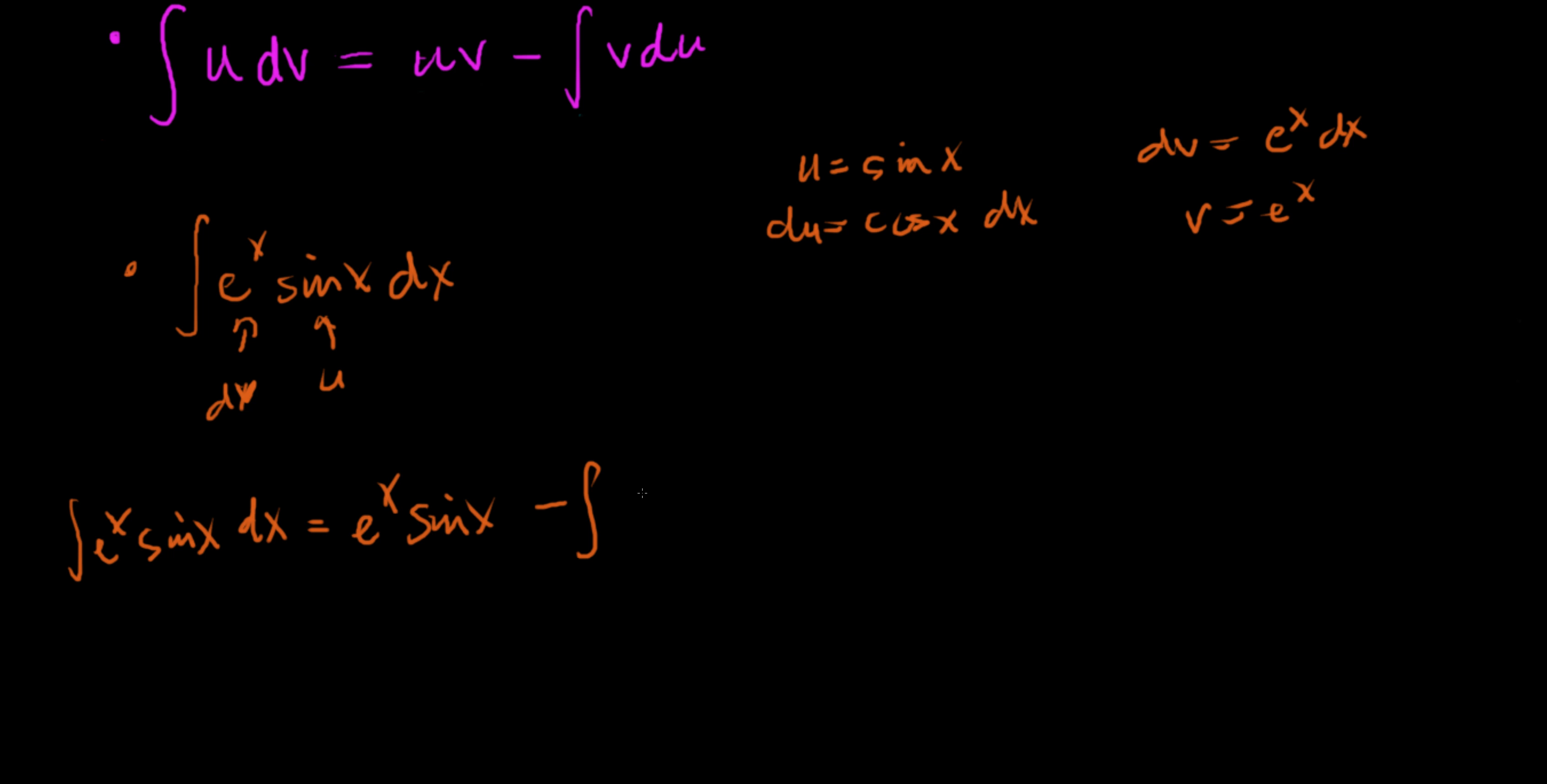Minus the integral of vdu. v is e to the x, du is cosine of x dx. So it doesn't look like we've done anything really to get any progress towards our answer because we have the same form that we started out with. We have an exponential times a trig function. But if we do one more iteration it's going to become clear why this is solvable.